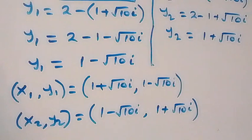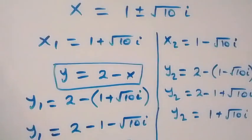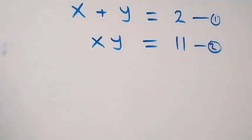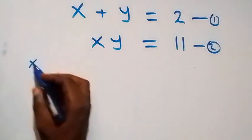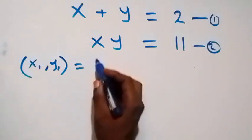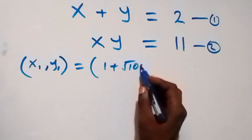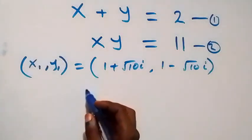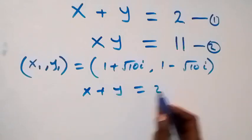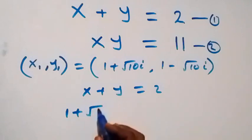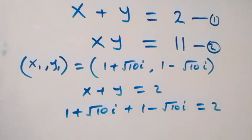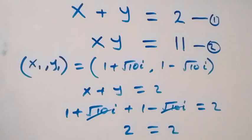We can check to confirm the solutions satisfy the given problem. For the first solution, x1 comma y1 equals 1 plus root 10 i comma 1 minus root 10 i. Substituting into equation one, x plus y equals 2: we get 1 plus root 10 i plus 1 minus root 10 i. The root 10 i terms cancel, leaving 1 plus 1 equals 2, so left hand side equals right hand side.